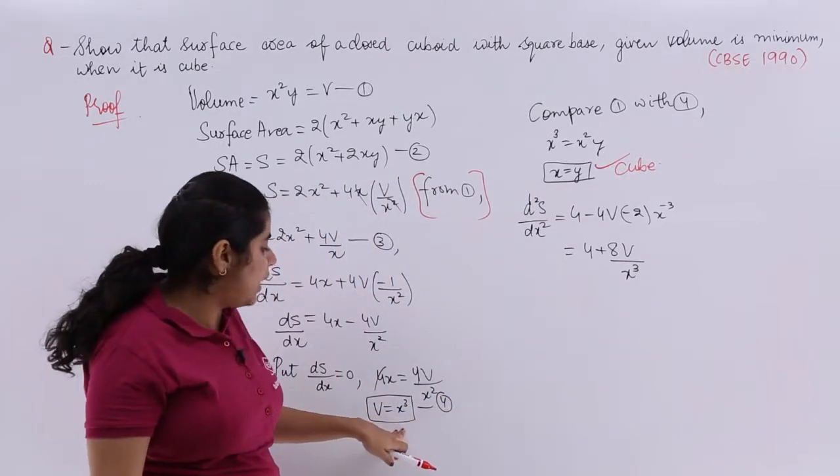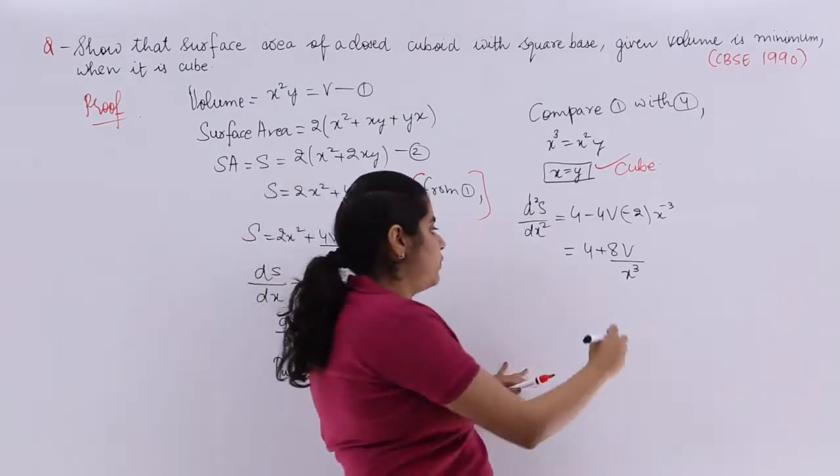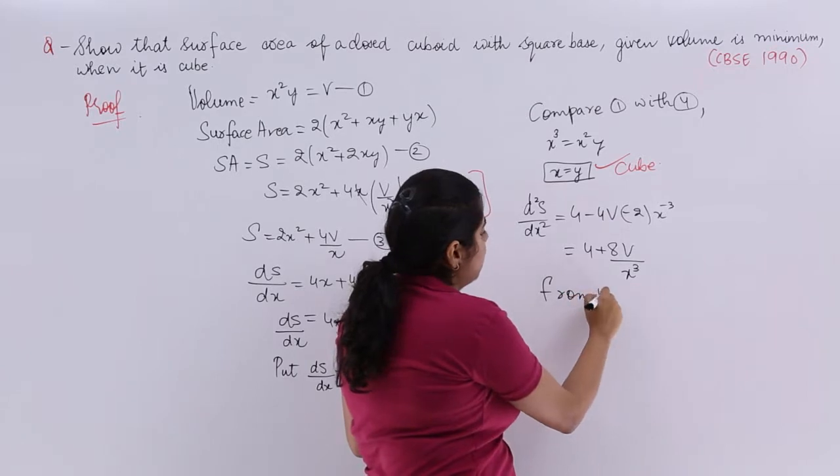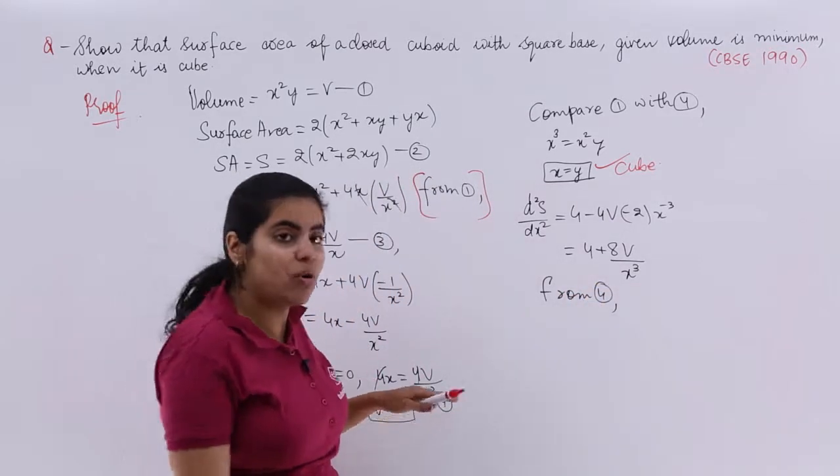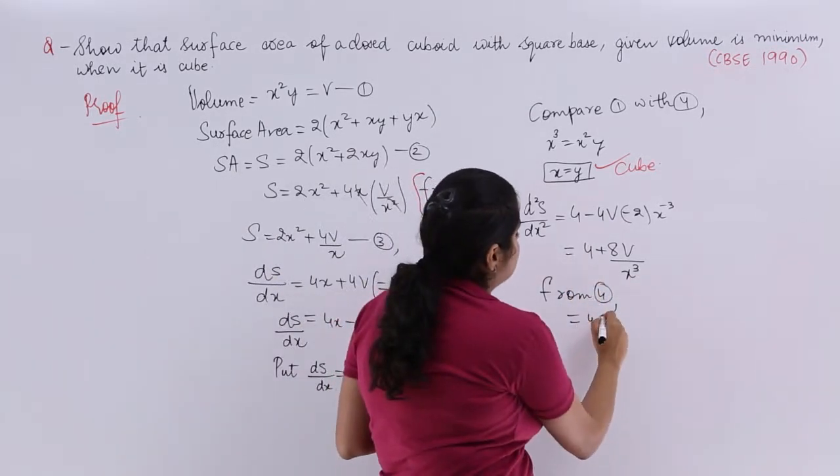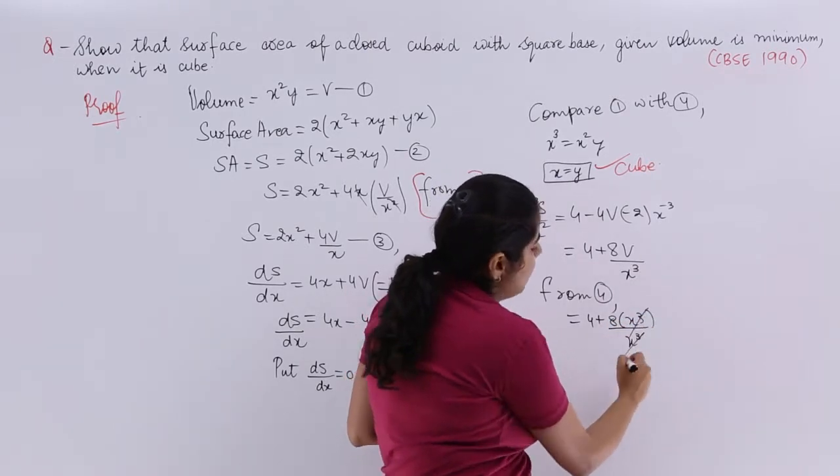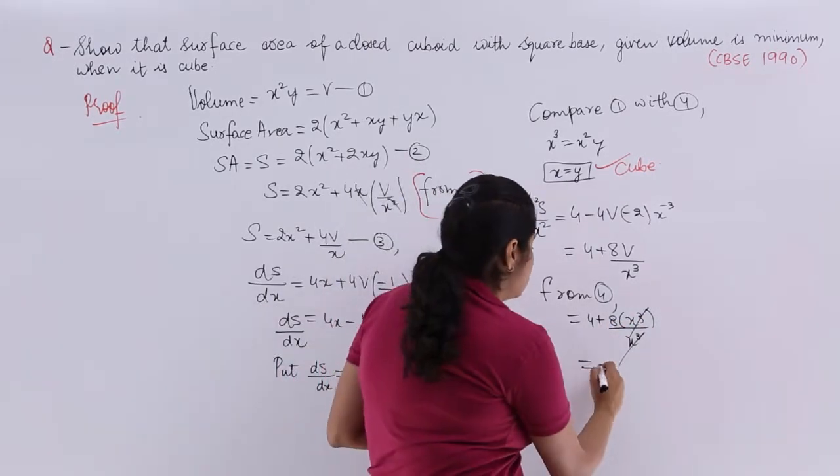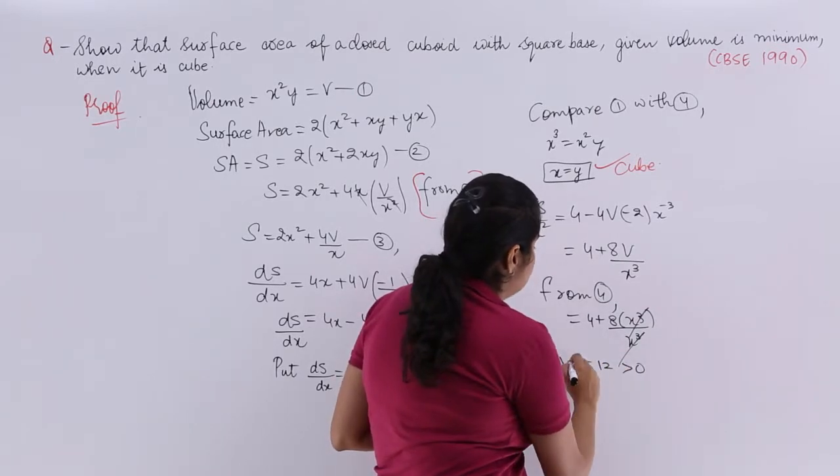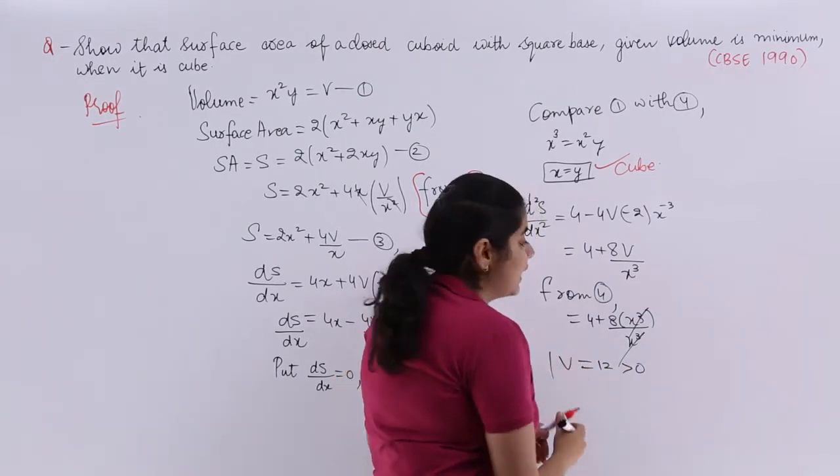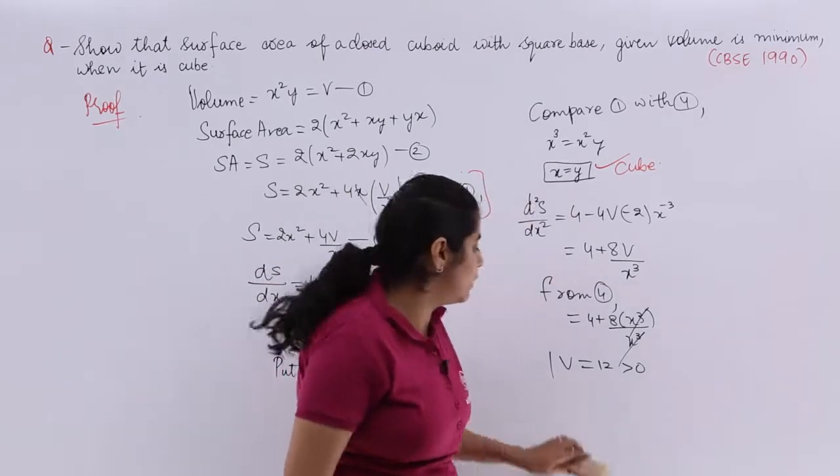Now what is the value of V? V is definitely from 4, from equation 4, V is equal to X cube. So it is 4, 8, X cube upon X cube. Cancelling whatever cancels. So it is 12 which is greater than 0 is the value of second derivative. And second derivative is coming out to be 12 which is greater than 0, so it has to be minima.